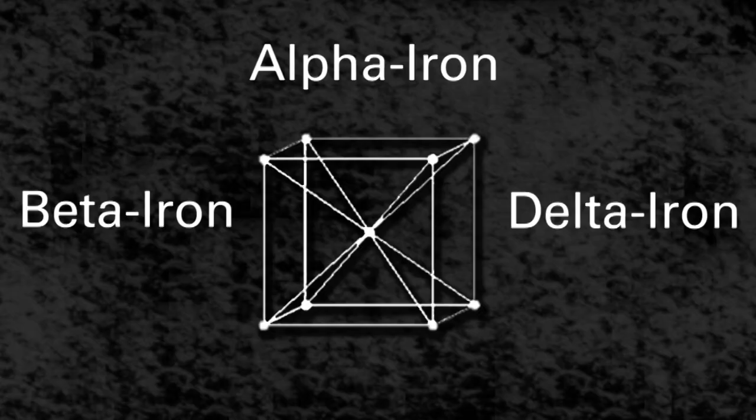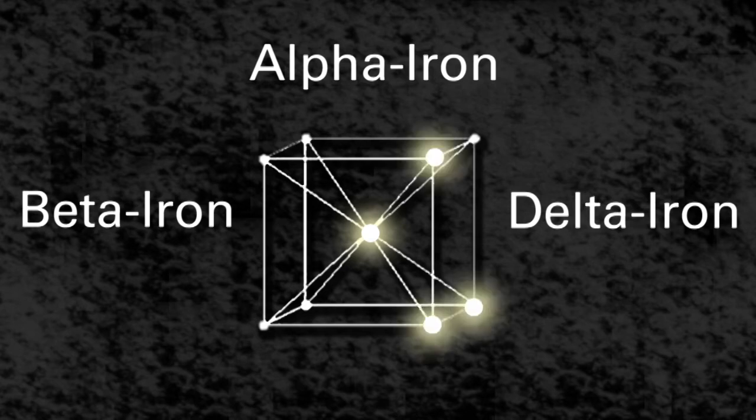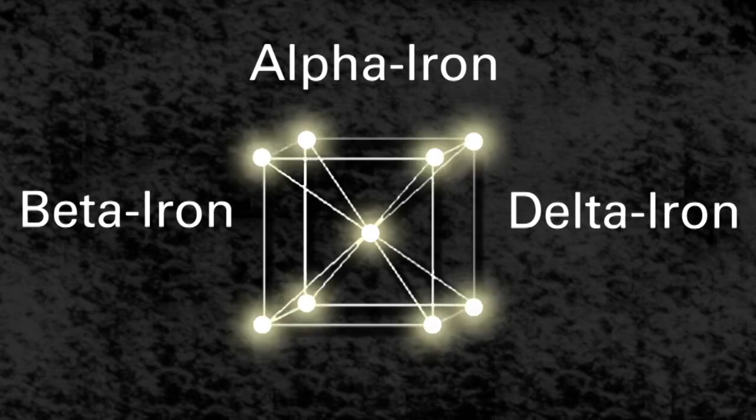In this structure, there is an iron atom at the center of the cube, which is linked to all eight iron atoms at the vertices of the cube.